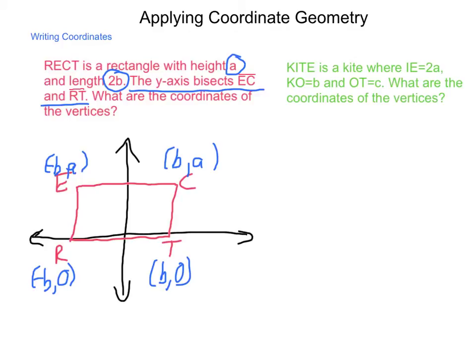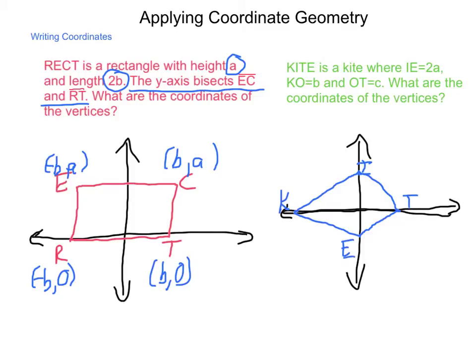Let's try another one of these and see what it looks like. KITE is a kite where the length of IE is 2A, the length KO is B, and the length of OT is C. O represents the origin of a graph. So get a quick set of axes sketched in here again. And we have this kite, and we're going to name the vertices K, I, T, and E.